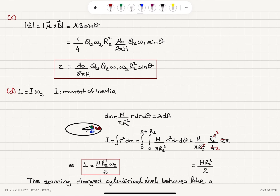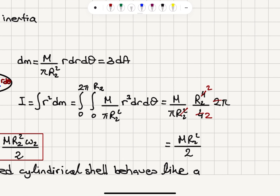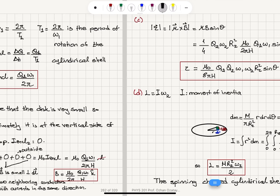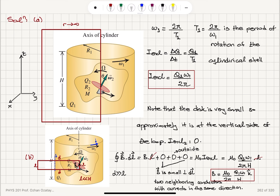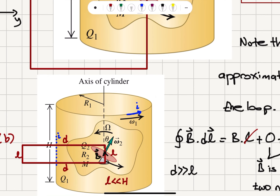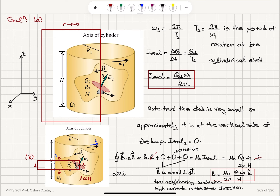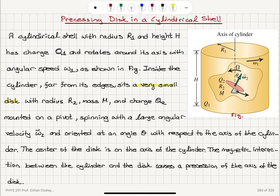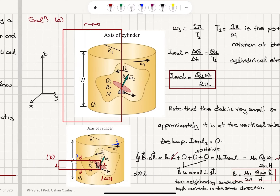The spinning charged cylindrical shell behaves like a solenoid — all the currents defined by these infinitesimal conductors are like current loops. In summary for this problem of the precessing disk in the cylindrical shell: for the cylinder viewed with an Amperian loop as r goes to infinity, the magnetic field outside is zero.